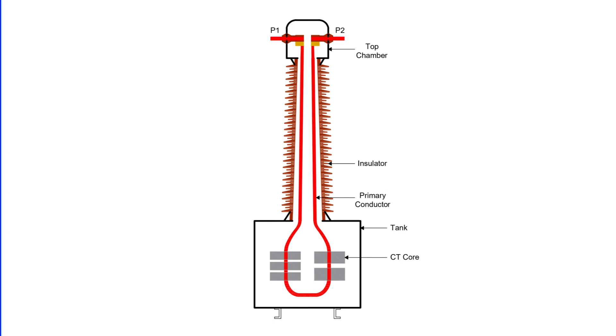Now here's the problem. Since the tank is grounded and the primary conductor is at high voltage, any failure in internal insulation can cause an arc to jump to the tank body. That's what leads to the violent explosions we often see when dead tank CTs fail.